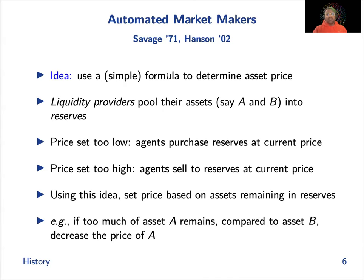This idea was really invented in the 1970s with Savage, taking statistical scoring rules and trying to make market scoring rules out of them, popularized by Robin Hanson in 2002. The idea is you use a simple formula to determine asset prices as a function of liquidity — the quantity of assets locked into a contract. Liquidity providers pool their assets A and B into reserves. If the price is too low, agents can purchase assets from the market maker and sell externally, and if too high, buy externally and sell back to the market maker, achieving price synchronization.